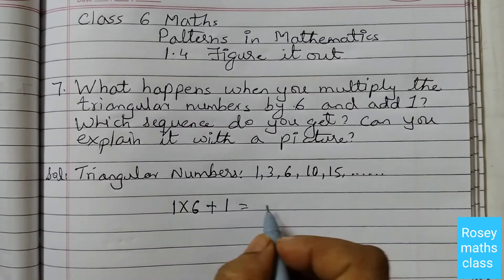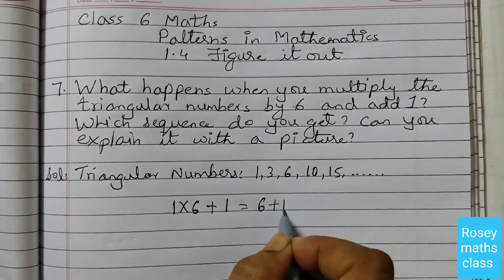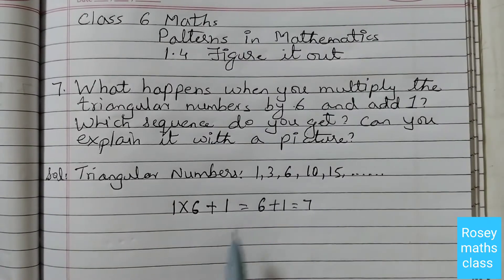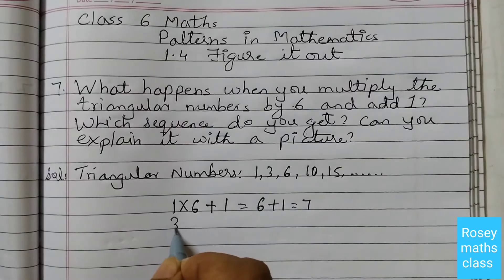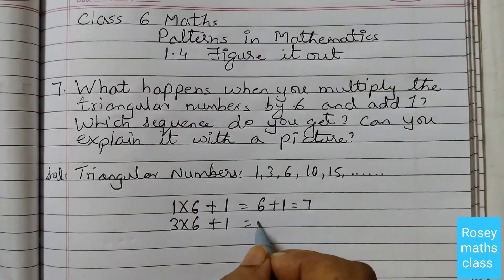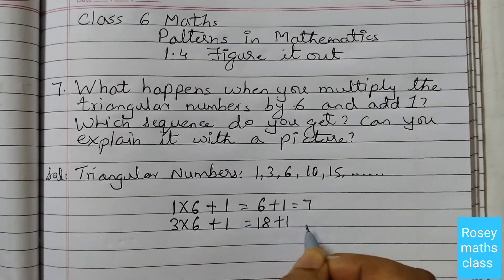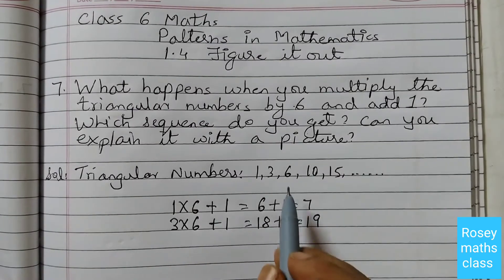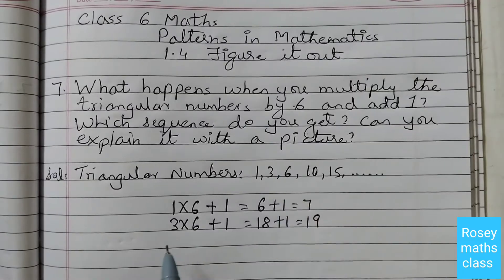So what do we get? 1 into 6, 6 plus 1 that is 7. Same way 3, 3 into 6 plus 1. 3 times 6 is 18 plus 1, 19.